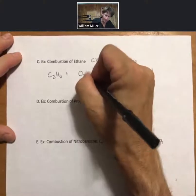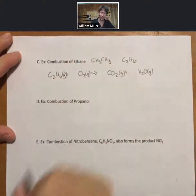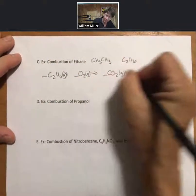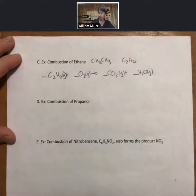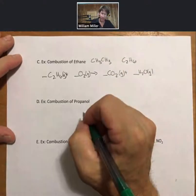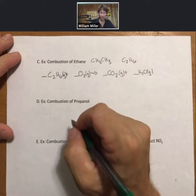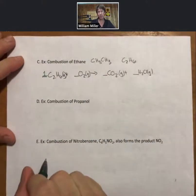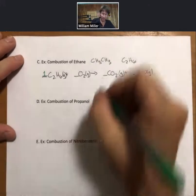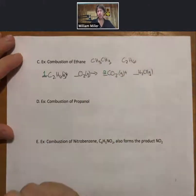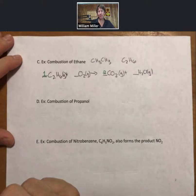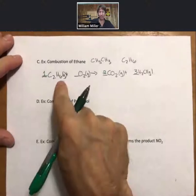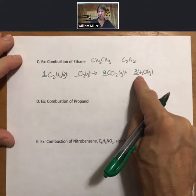You don't always have to put in the phases, but since we know them we will. Put in coefficients in front or lines for them. Start with your most complex formula. Almost always the first thing in a combustion reaction. Now I have two carbons. I need two carbon dioxides. I have six hydrogens on the reactant side. Now I have six hydrogens on the product side.